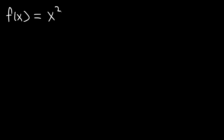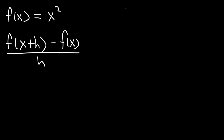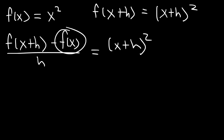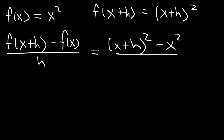Now here's another one to try. Let's say that f of x is equal to x squared — determine the difference quotient of x squared. First let's find f of x plus h: we replace x with x plus h, so it's x plus h, squared. So we have x plus h squared minus x squared, divided by h.